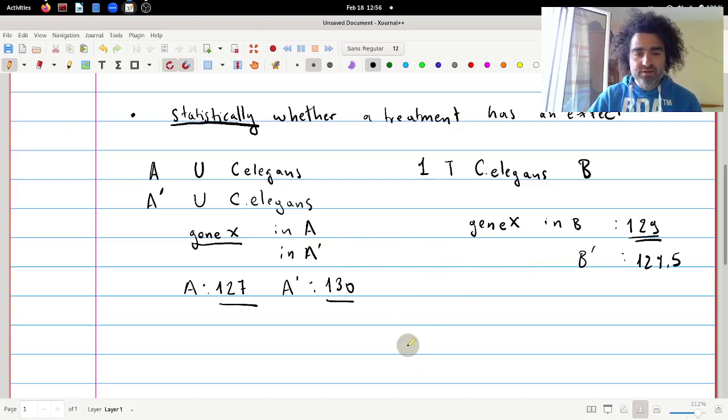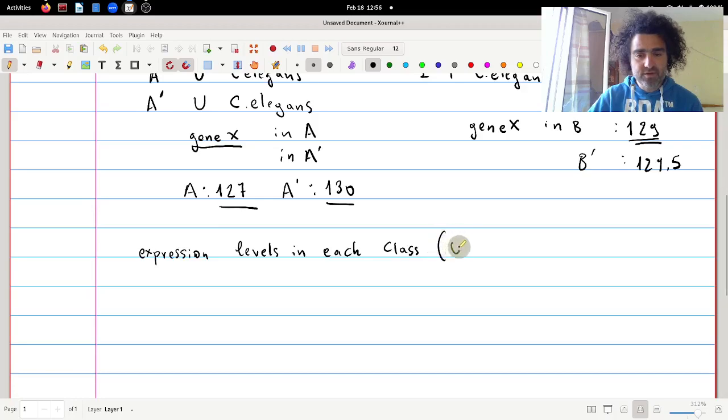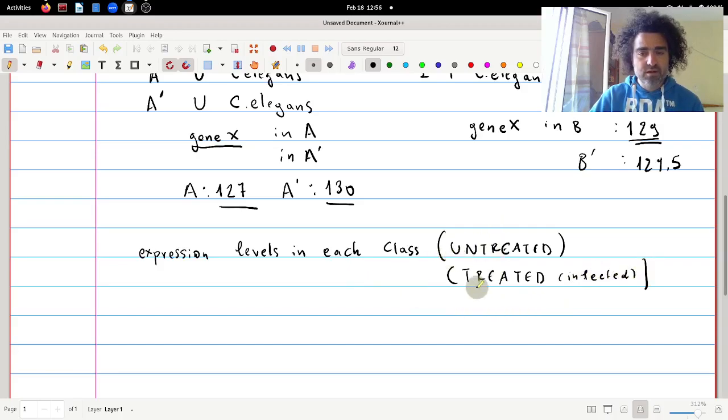Therefore what is important for us to decide whether some treatment affects the expression level of a gene is to compare two things. One is the expression level in each class, so this is in for example untreated class and treated class, and to compare the expression levels within the classes with the expression levels between the classes.